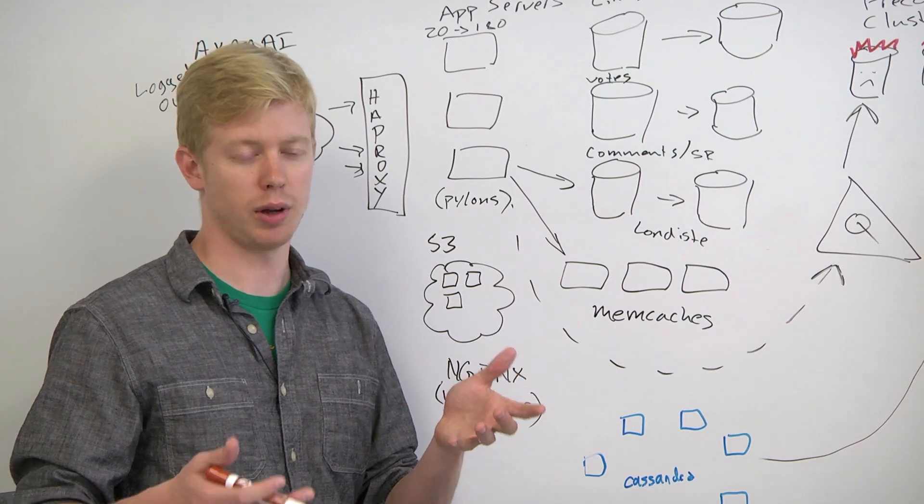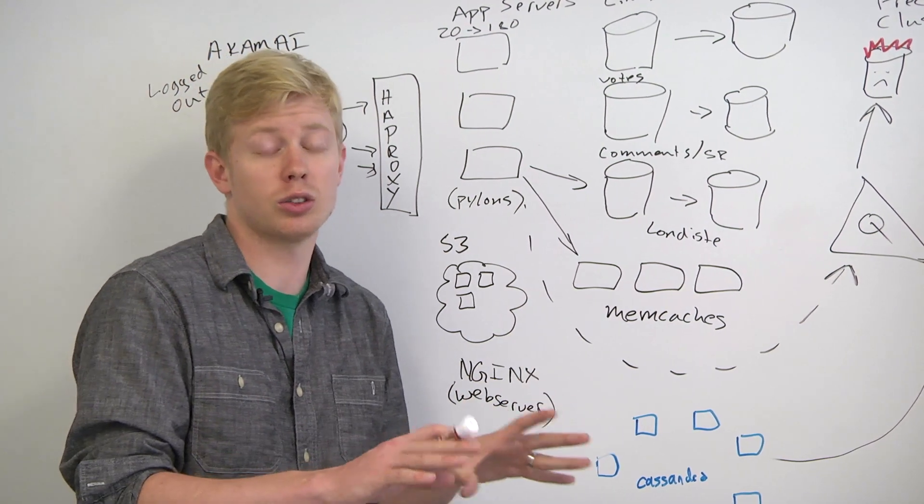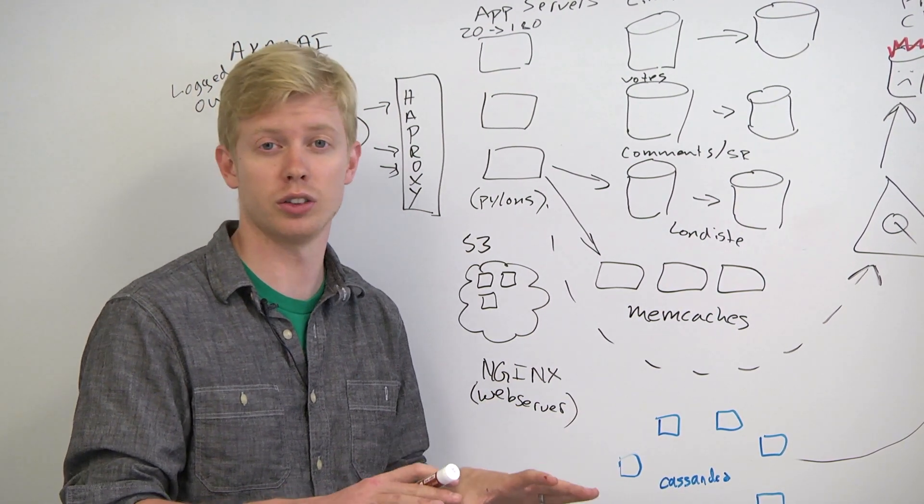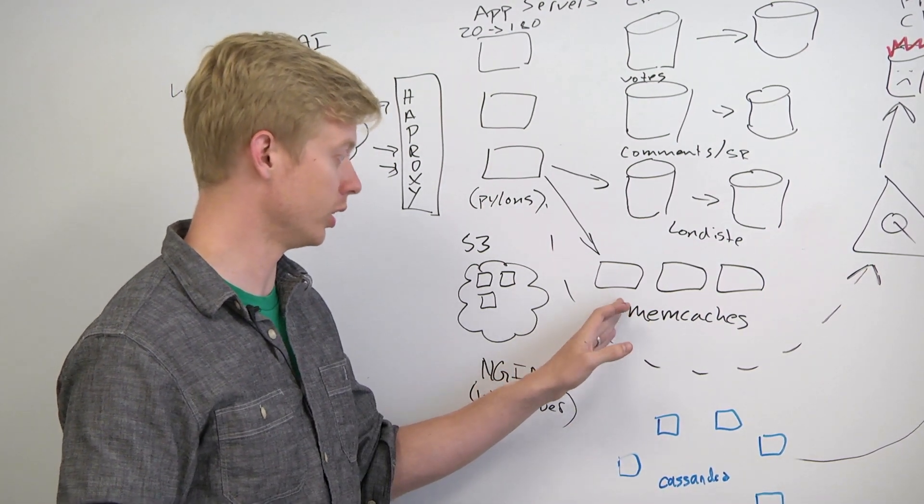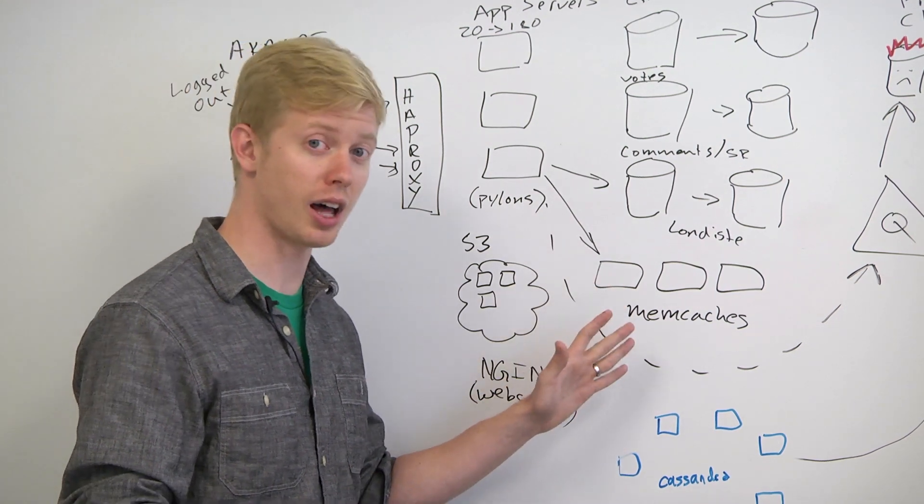And my answer was you can either use transactions in the Datastore, which I don't fully understand because I'm new to the Datastore, or you can use Memcached, which is one of the 101 uses of Memcached as this global lock.